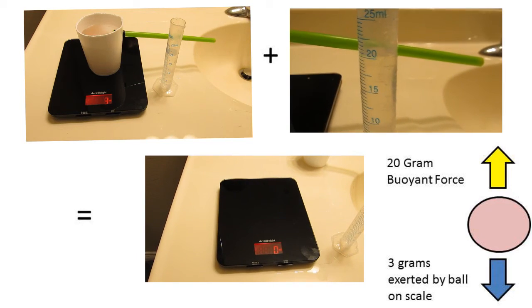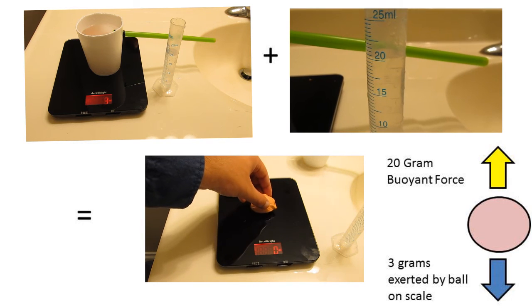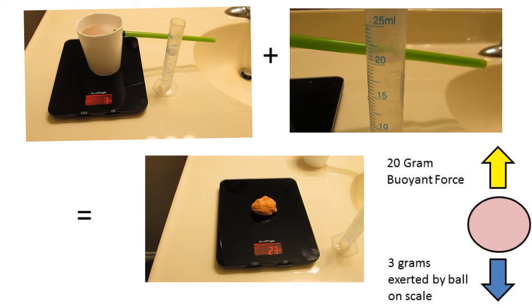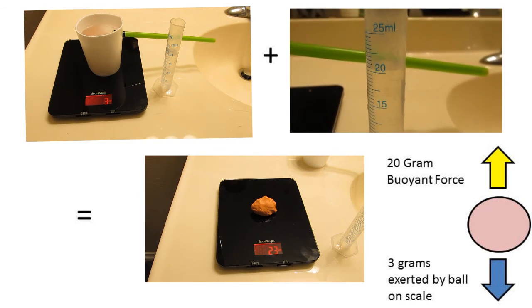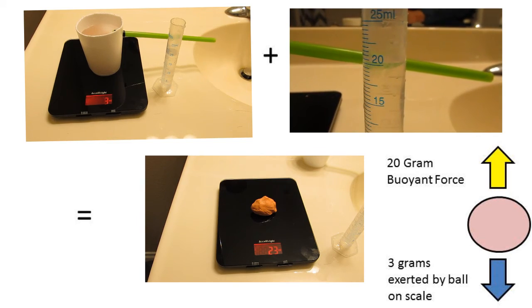If we take the 3 grams of force exerted by the ball on the scale, and the 20 milliliters, or 20 grams of buoyant force, we get a total weight of the clay ball of 23 grams.